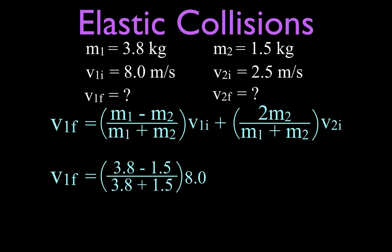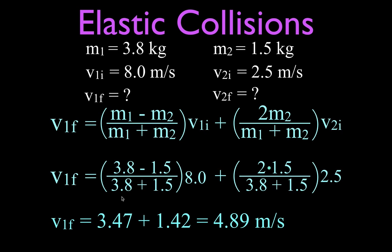It's good to just go step by step. This is the first term, 3.8 minus 1.5, and then we add the two masses multiplied by 8. We do something similar: 2 times 1.5, add the two masses together, divide, and then multiply by 2.5. We're going to have one term and two terms. When we do that, the first term turns out to be 3.47 meters per second, and the second term turns out to be 1.42. Both terms are positive. So the final velocity of mass number 1 is 4.89 meters per second.